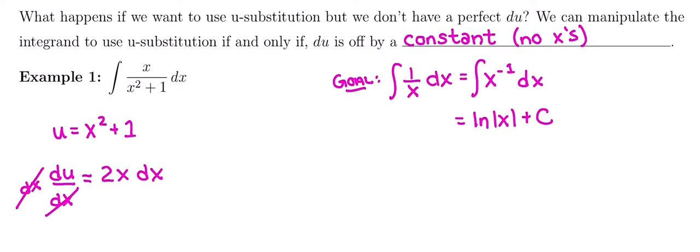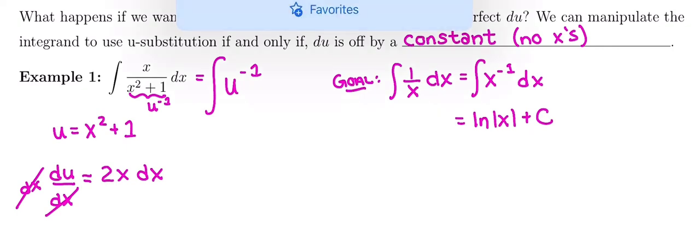And now we are ready for some substitution. So we want to write this whole integrand in terms of u's. So first of all, we know u is in the denominator, so it's raised to some negative power. And since it's not written, it's u to the negative 1. And then we want to look at what we have left over. So what we have left over is an x and a dx.